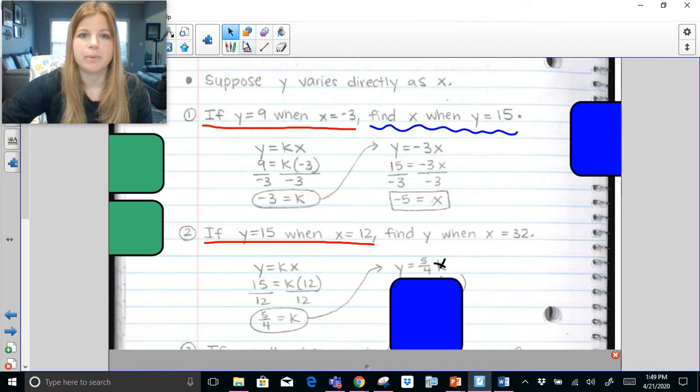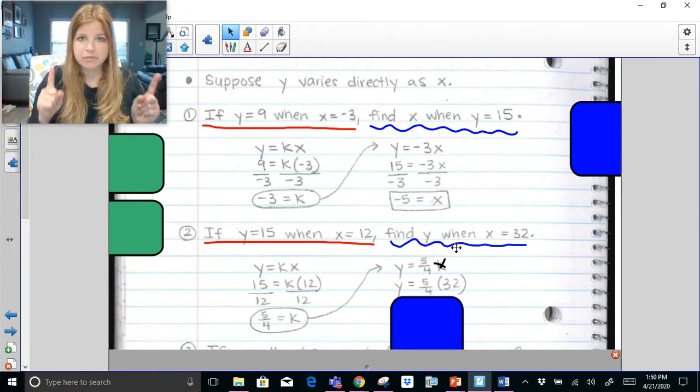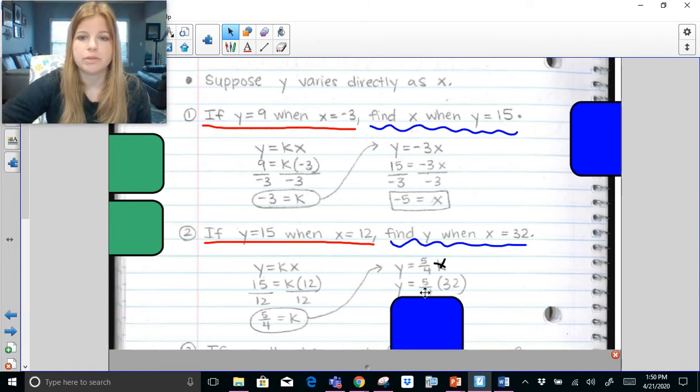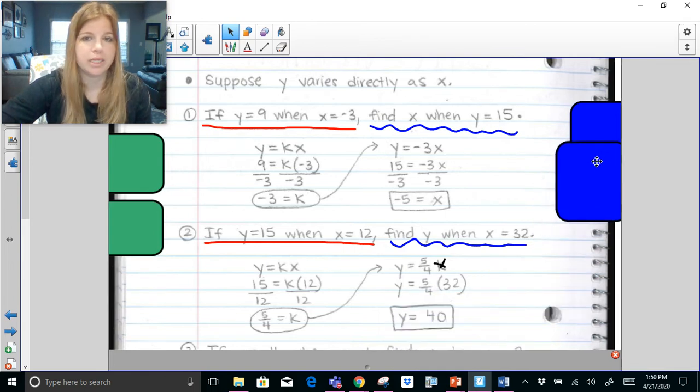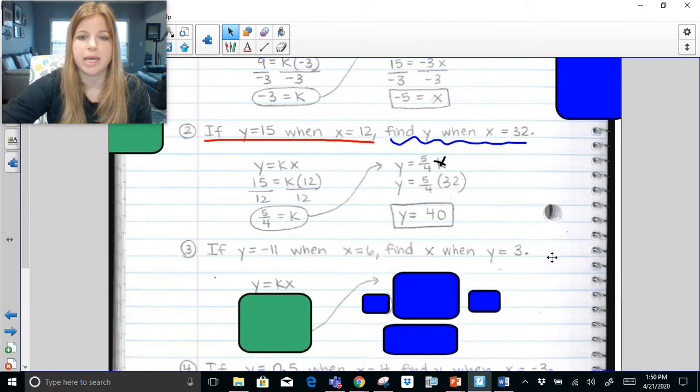And now I'm going to do the second part. The second part of my problem says find y when x equals 32. So I'm going to go ahead and I'm going to plug in a 32 for x. Now this one's a little different because look, the first one said find x. Second one says find y. So we just have to make sure we're plugging in our numbers exactly where it tells us to and then we're good to go. 5 fourths times 32 ends up being 40 and that's my answer. y equals 40. Let's try a couple more.